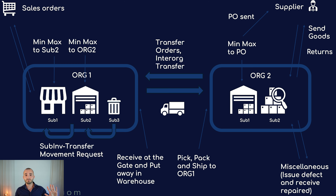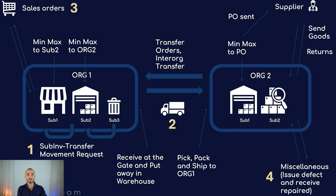Let's recap — five basic types of transactions: in an organization, between organizations, with a customer, miscellaneous, and replenishment transactions. As you can see, inventory management is pretty logical, but there is a lot more to cover.